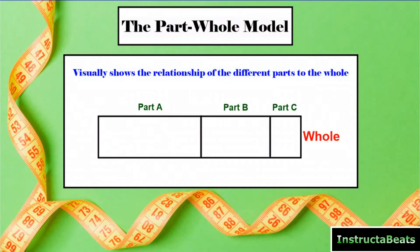We've had a few different lessons about the part-whole model. We talked about using it for addition word problems, for subtraction word problems, and today we're going to be talking about it for multiplication. It's going to be the same exact part-whole model. It's going to visually show the relationship between the different parts and the whole. You could have two parts, three parts, five parts, you could have 40 parts.